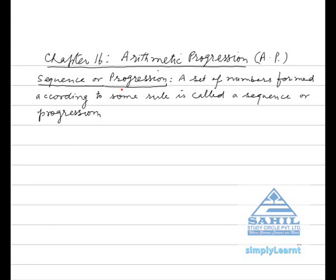Chapter 16: Arithmetic Progression. A set of numbers formed according to some rule is called a sequence or progression.